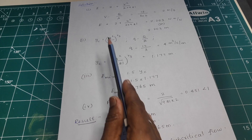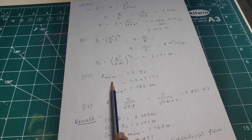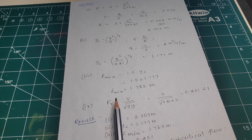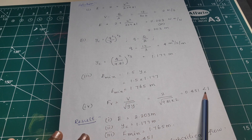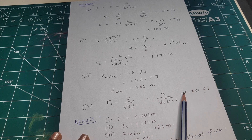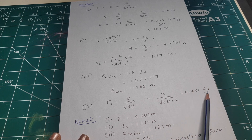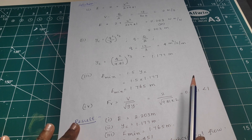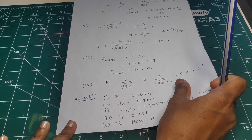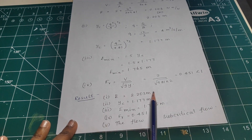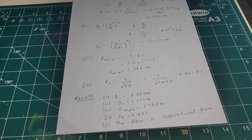If y is greater than yc, it is subcritical flow. If the Froude number is less than 1, the flow is subcritical. If the Froude number is greater than 1, the flow is supercritical.